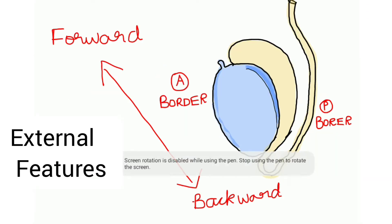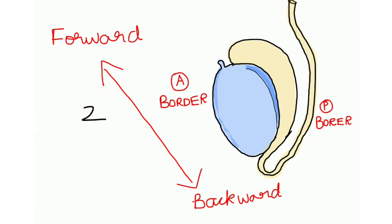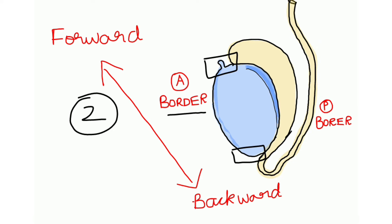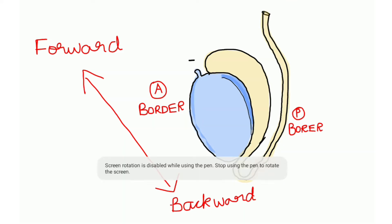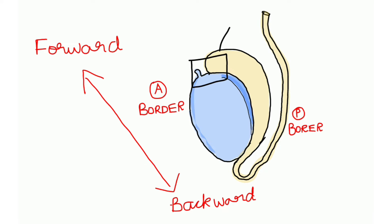Next, the external features. So remember the rule of two: there are two poles — the upper pole and the lower pole. There are two borders — the anterior border and the posterior border. There are two surfaces — the lateral surface. At the upper pole, the head of the epididymis is attached. There is a small oval body called the appendix of testes, which is the remnant of the paramesonephric duct. On the anterior border, the tunica vaginalis is complete.